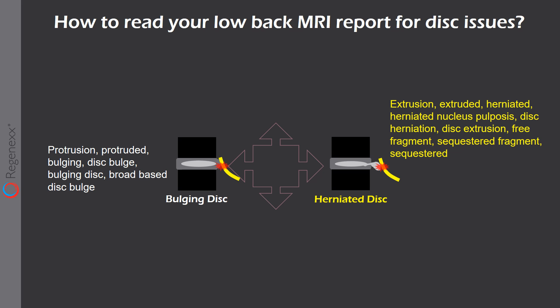A herniated disc is where the inside gel herniates and squirts out, and that can put pressure on or irritate a nerve. The words to look for are: extrusion, extruded, herniated, herniated nucleus pulposus, disc herniation, disc extrusion, free fragment, sequestered fragment, or sequestered.